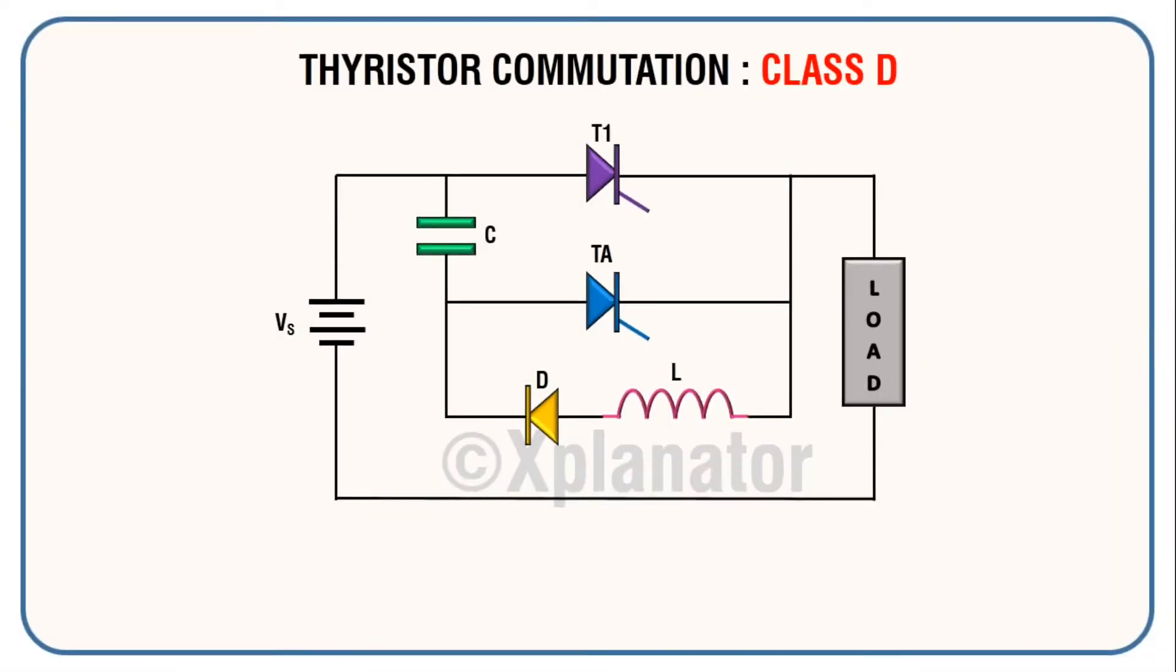For today, we are gonna plot the waveforms associated with class D commutation circuit. Before that, two assumptions have to be taken into consideration: 1. The capacitor is initially charged and 2. The load current is assumed to be constant.